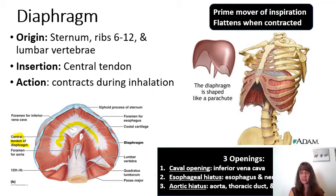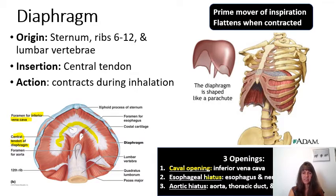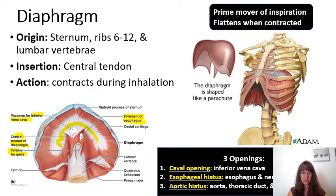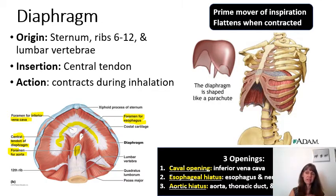The diaphragm has three openings. One is the caval opening for the inferior vena cava, a large vein returning blood from the inferior portion of the body to the heart. Another is the esophageal hiatus, an opening for the esophagus and its associated nerves and the stomach. We also have the aortic hiatus, an opening for the aorta passing from the thoracic cavity to the abdominopelvic cavity, as well as for the thoracic duct and the azygos vein.